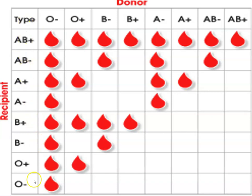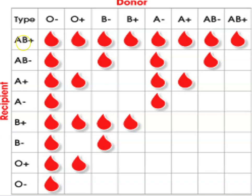Adding in the Rh factor complicates who can give and receive blood. Looking down the column, type O-negative has a blood drop in all cells, making O-negative the universal donor — it can give blood to any blood type, positive or negative. That's because O-negative has no A, B, or Rh antigens on the blood cell surface, so it's not perceived as a threat. Across the row, AB-positive is the universal recipient because it has all three antigens — A, B, and Rh — so it can receive from any blood type.